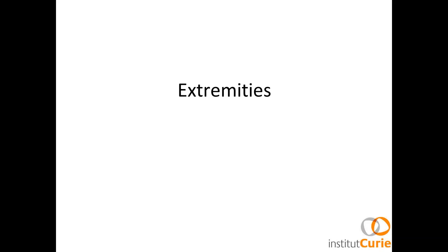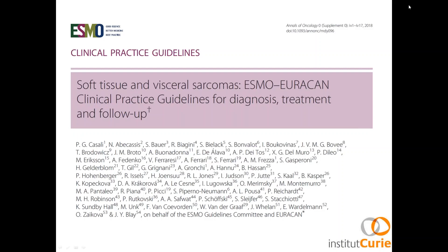I have divided the presentation into mostly two parts: extremity sarcomas, and then we'll talk about trunk and mostly retroperitoneal tumors. As regards extremities and all localizations, we have the very recent clinical practice guidelines from the European Society of Medical Oncology.